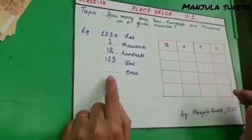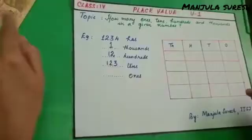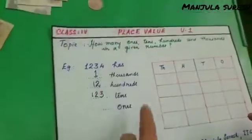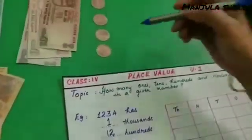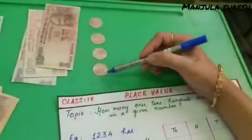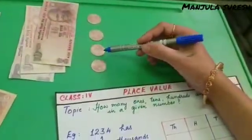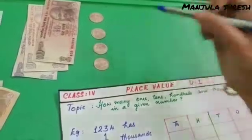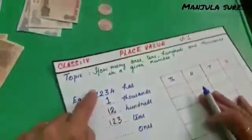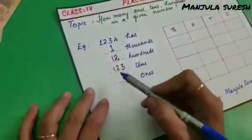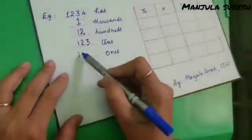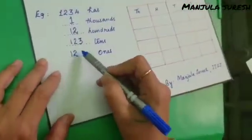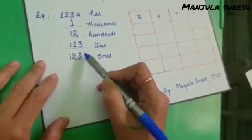And finally it has how many ones. We know that if we keep the denomination as 1 rupee here, this number can be formed with 1234 ones.